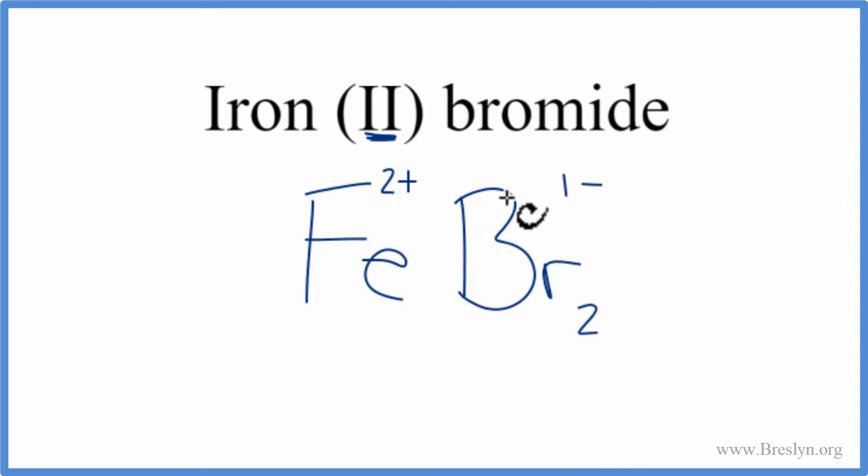So I have 2 bromine atoms, 2 times minus 1, that gives me 2- for the Br's. One iron atom, 1 times 2+, that gives us 2+. 2+ and 2-, that adds up to 0, so we have a net charge of 0. This is the formula for iron (II) bromide.